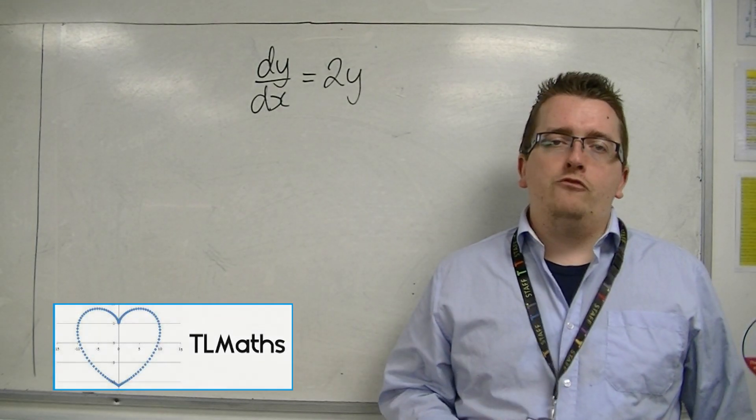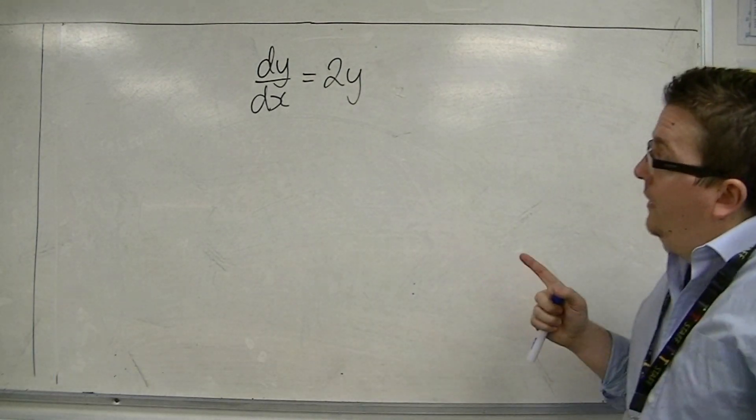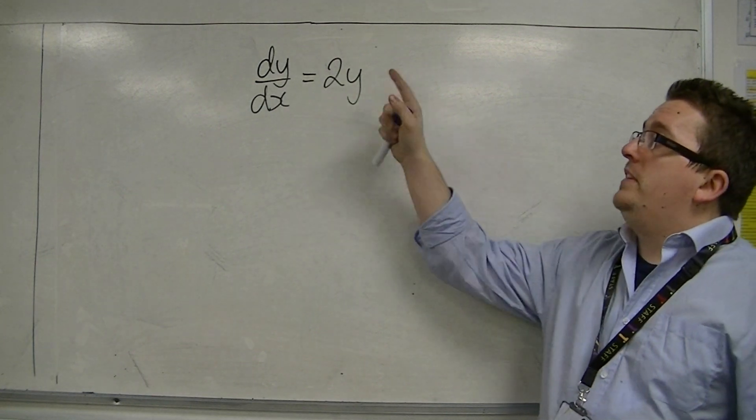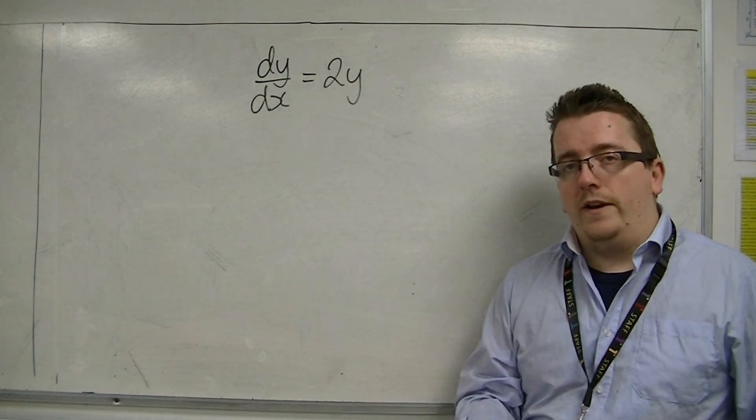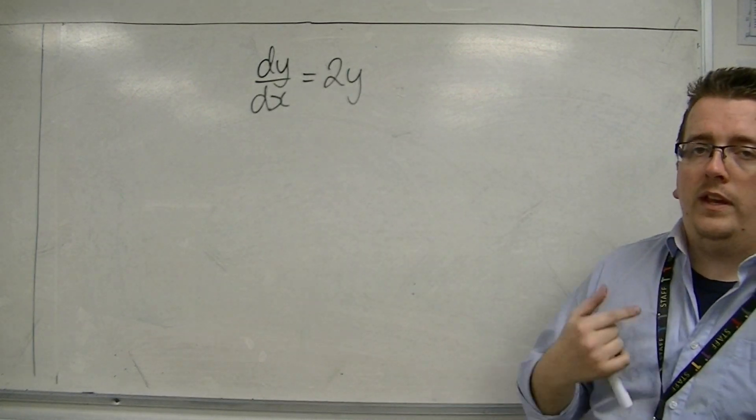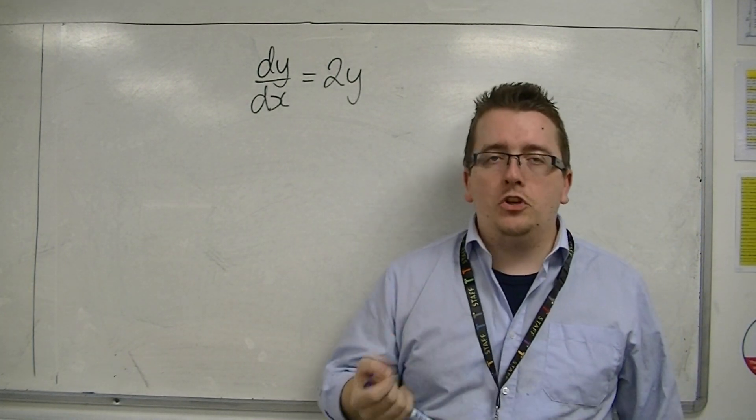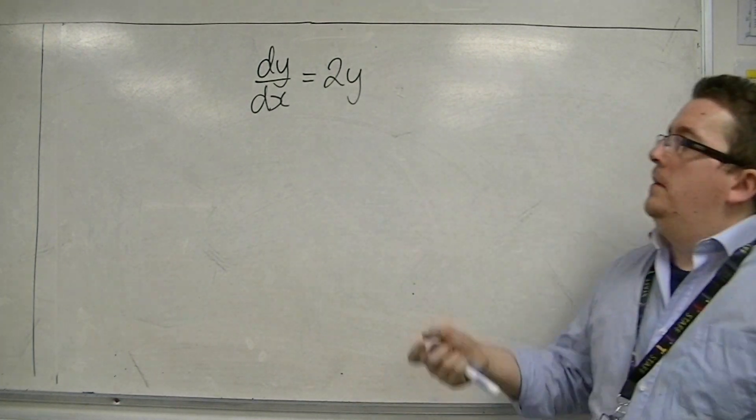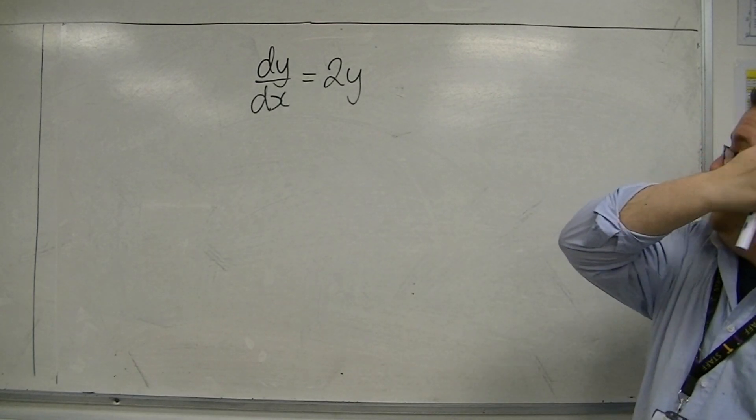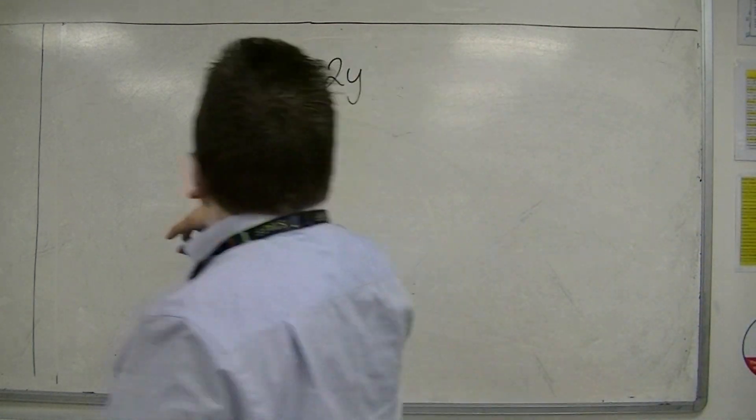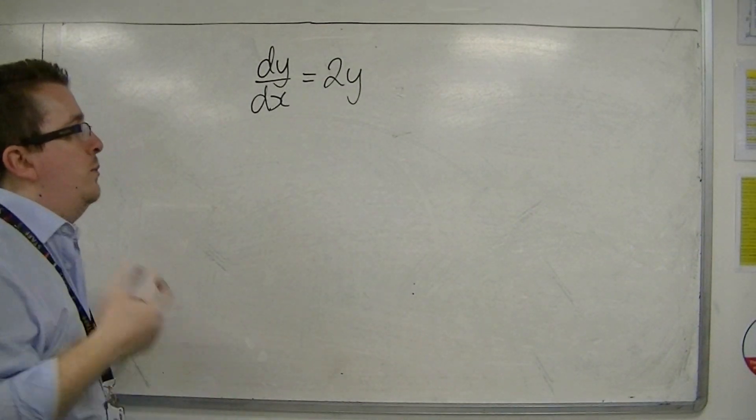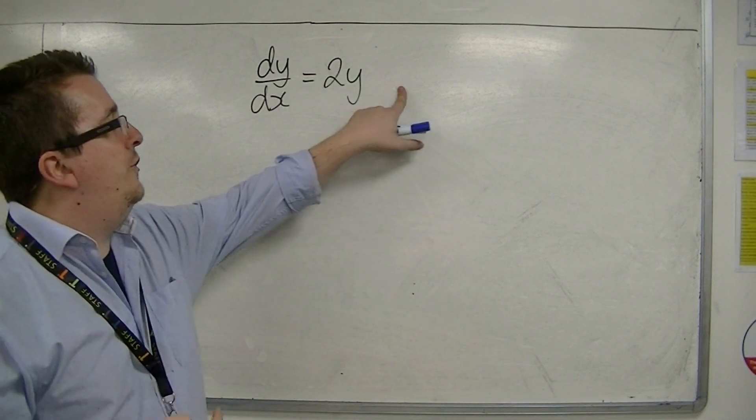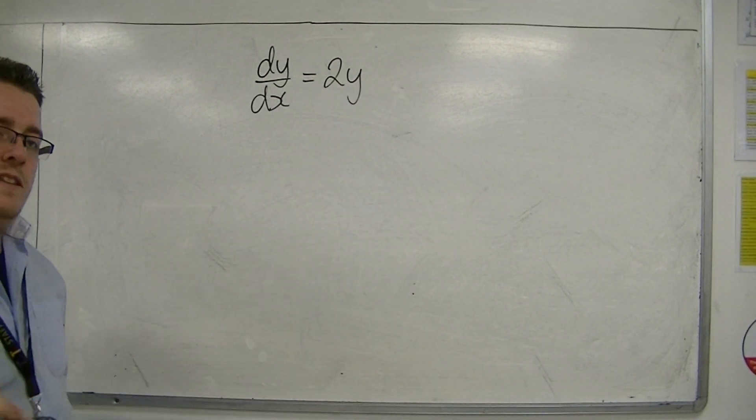So if we're looking at a differential equation like this, where we've got dy by dx equal to a function of y, we must solve this in a different way, because we can't integrate both sides. That is because we're looking at an implicit equation here, where I cannot integrate y with respect to x, because y is a function of x. So I can't really do it that way.